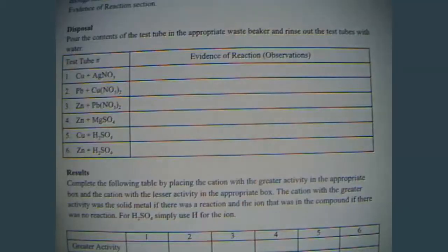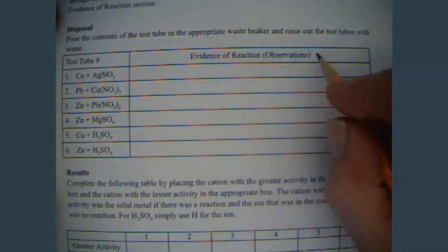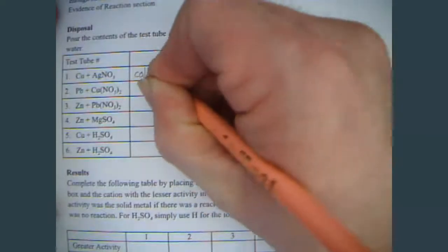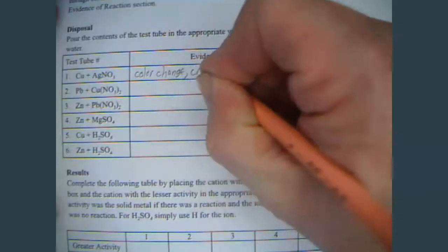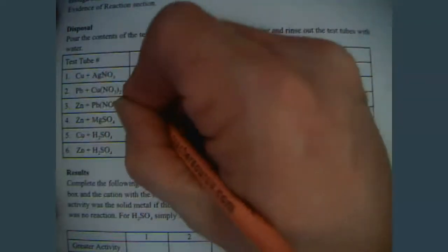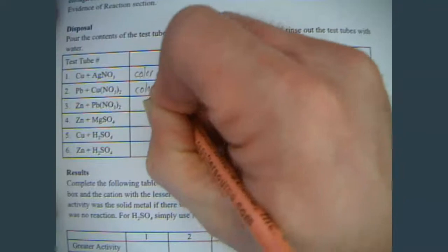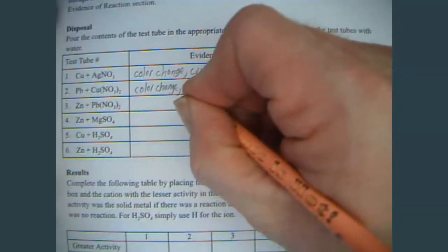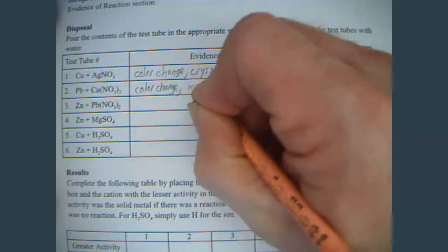Now, let's go ahead and record our evidences of reaction. Different things that indicate that a chemical reaction took place. So, we had a color change and crystals formed. For the second one, with the copper nitrate and the lead, same thing. We had a color change. It almost looked like moss growing on there. So, we'll put mossy growth.